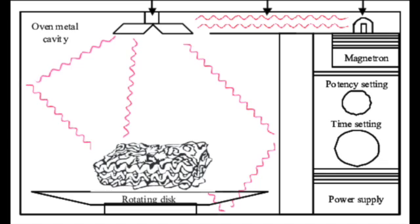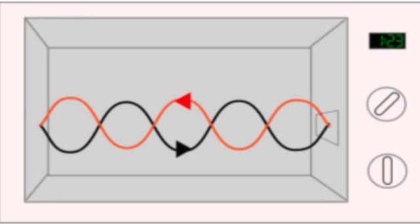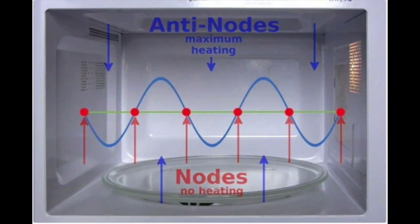These hot and cold spots occur because of the ways the rising and falling microwaves interact with each other. Microwaves are reflected by the oven walls forming standing waves in the cooking chamber. Standing waves are two waves of equal frequency moving in opposite directions. With standing waves, the peaks move up and down instead of left to right or side to side.